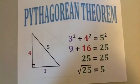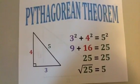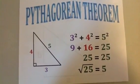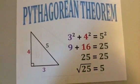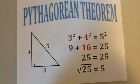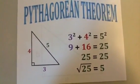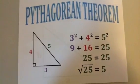On a right triangle, we can add the squares of the legs, and we'll get the square of the hypotenuse. And if we take the square root of our answer, we'll get the length of the hypotenuse.